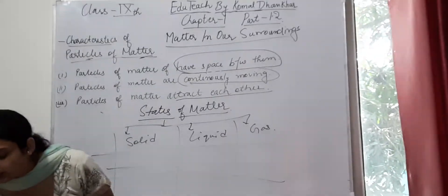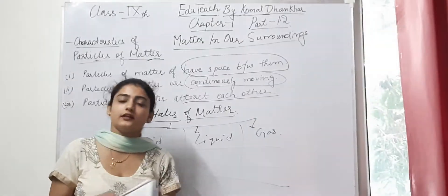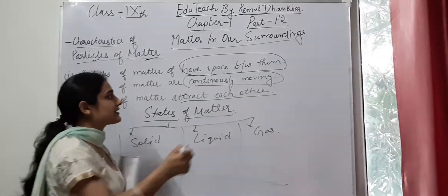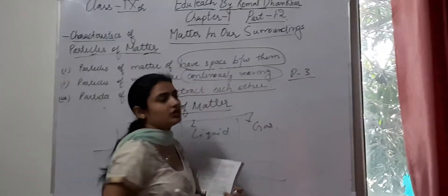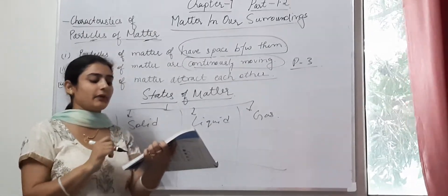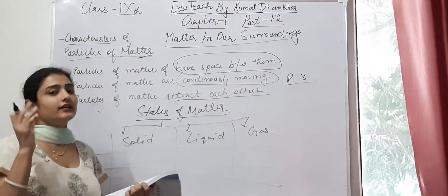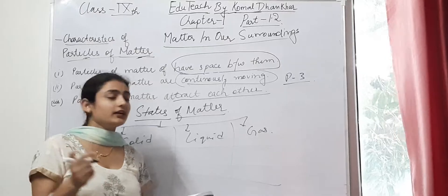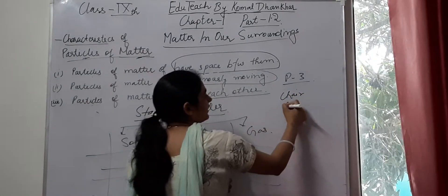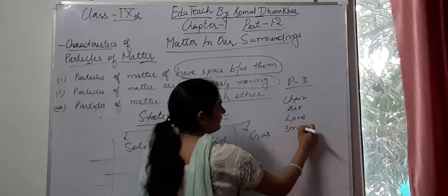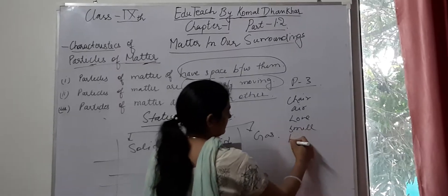Now, what are the characteristics of matter? On page number 3, there are 4 in-text questions. The first question is: which of the following are matter? Chairs — yes, chairs have mass and occupy space, so chairs are matter. Air is matter. Love, smell, hate, almonds, and thought are also listed.